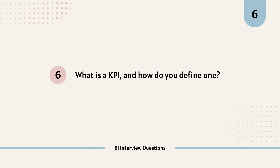The next question is: what is a KPI and how do you define one? A key performance indicator is a measurable value that indicates how effectively a company is achieving its key objectives. To define a KPI: first identify a business goal, then be specific and clearly define what you are measuring and why, make it measurable by ensuring it can be quantified with reliable data, establish a benchmark or target to measure success, and regularly review and adjust the KPI as per business goals.